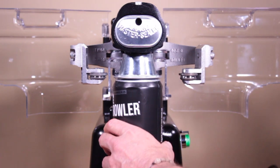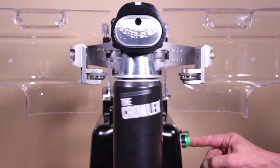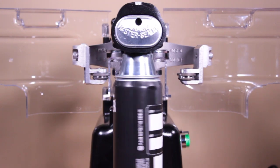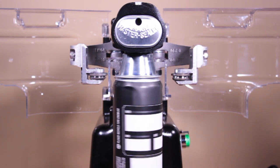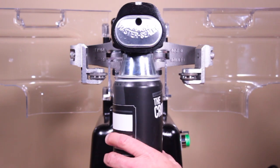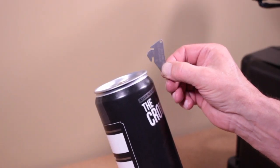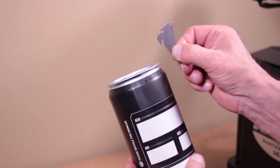Load a can and a lid into the seamer and cycle it. This cycle will only allow the first seam to run. We will now check our first seam measurements again. Repeat first seam adjustment steps if necessary.